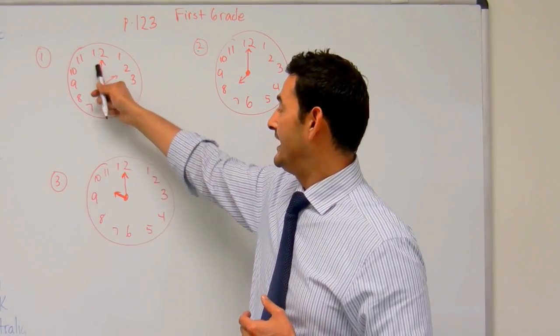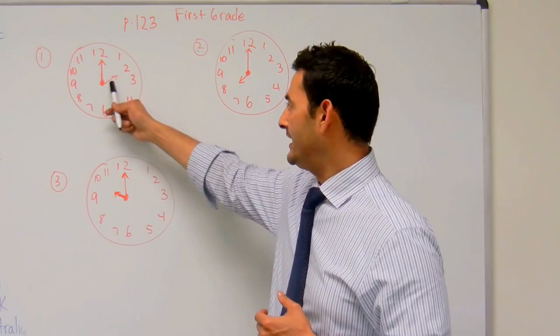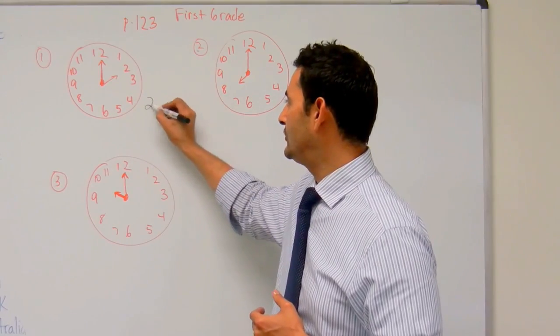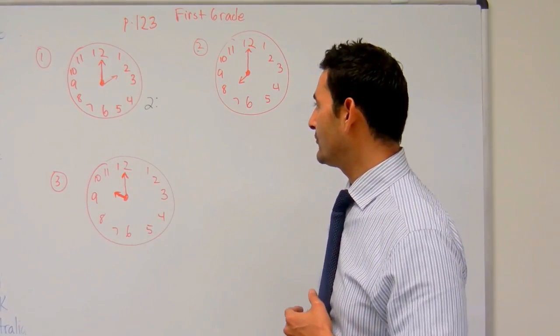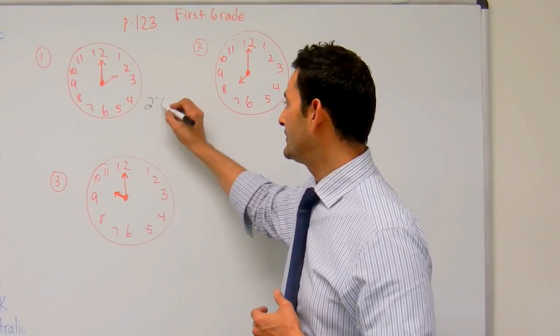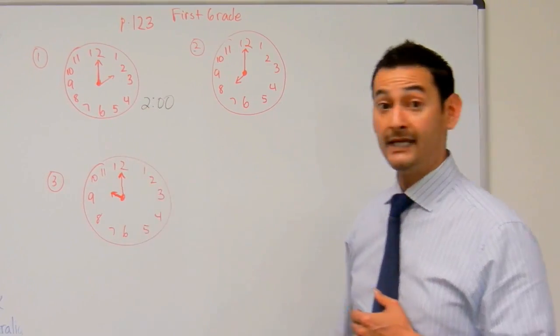So here we have a 2, and here we have a 12. Here we have the small one, that's going to be 2. The small hand is pointing to the 2, so we're going to write 2, and that 12 just stands for 0. So that's going to be 2 o'clock.